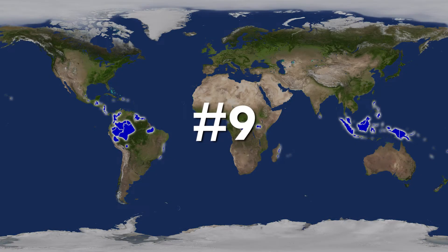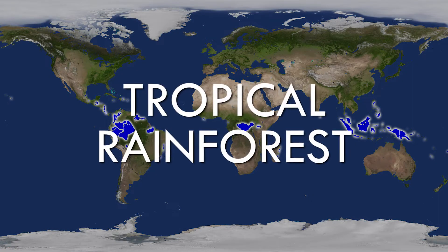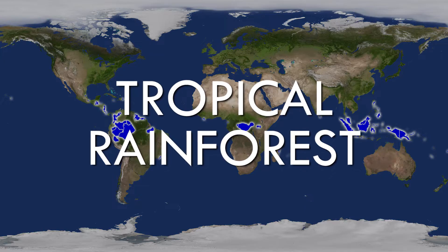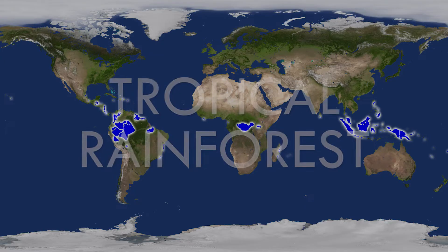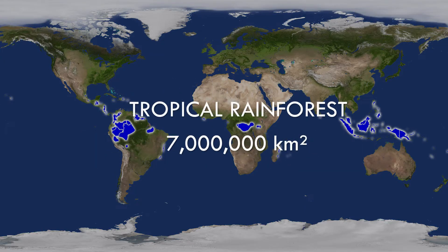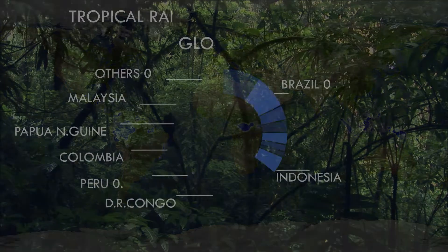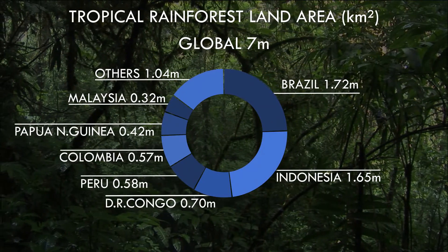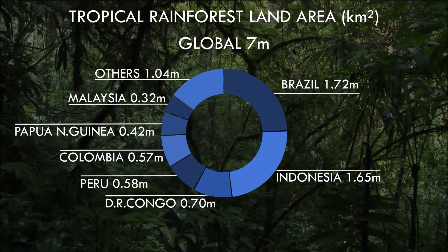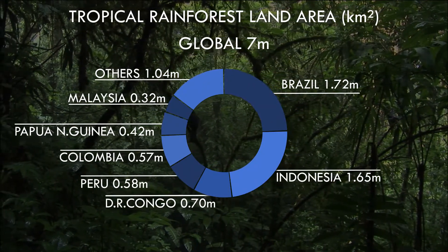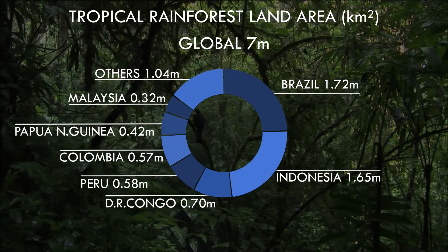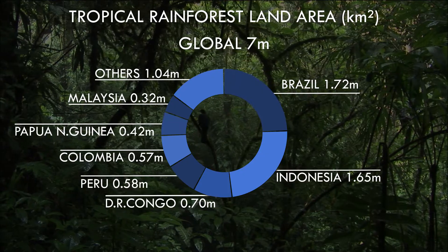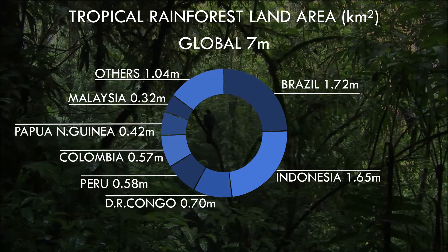The next largest climate type, at number 9, is the tropical rainforest, covering selected parts of the equatorial regions of our planet where rain is constant year round. Almost half of this area is within Brazil and Indonesia, with the remaining countries scattered across South America, Africa and South East Asia.